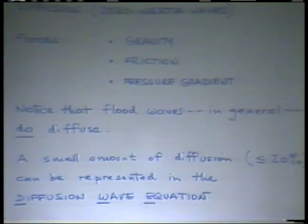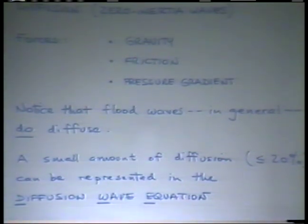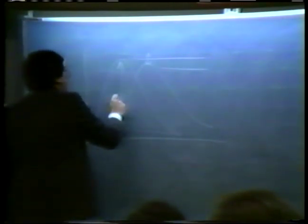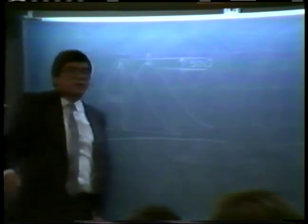Flat waves, in general, diffuse every time we do a calculation. Whether we use Muskingum or level-pool storage indication, any method will produce a small amount of diffusion. Price, in the UK Flood Studies Report written about 12 years ago, stated he could use the diffusion wave technique provided the diffusion is within about 30% — so if the input is 1,000 CFS and the output is no less than around 700 CFS, the diffusion wave technique is justified.